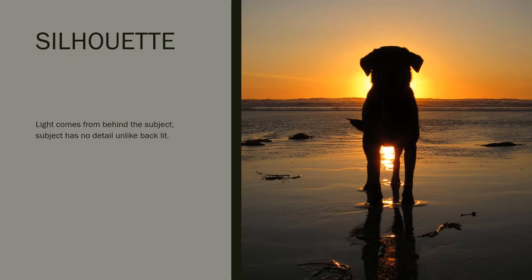Next we have a silhouette, which I'm sadly not going to be able to demonstrate because I can't replicate those conditions inside my apartment. A silhouette is when the light is coming from behind the subject, just like backlit photography. However, the subject itself is blacked out and we can't see detail. On this example of a dog on the beach, you can see the sun setting behind the dog, but we really can't make out much detail on the dog itself. This dog might also be considered backlit because we can see the nose and a little bit of the collar, but it is mostly in shadow, making it a silhouette.